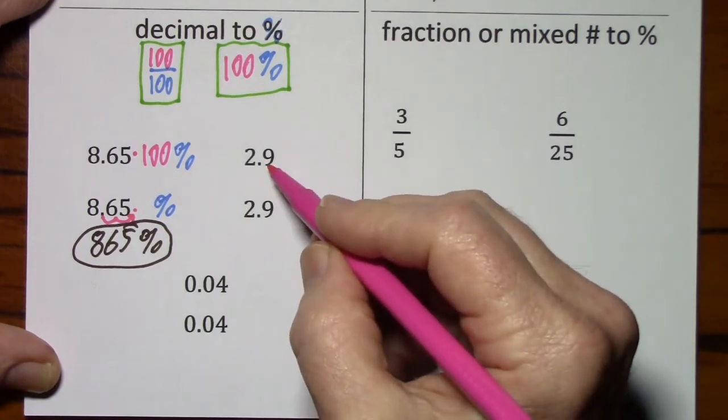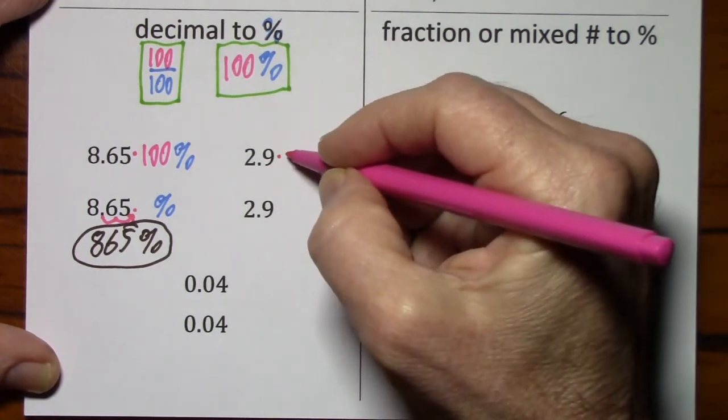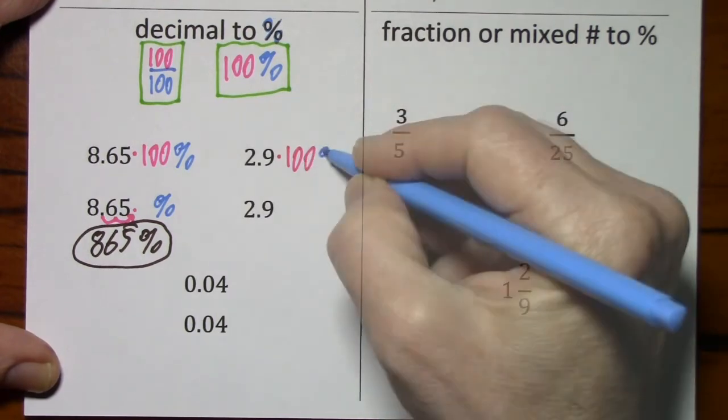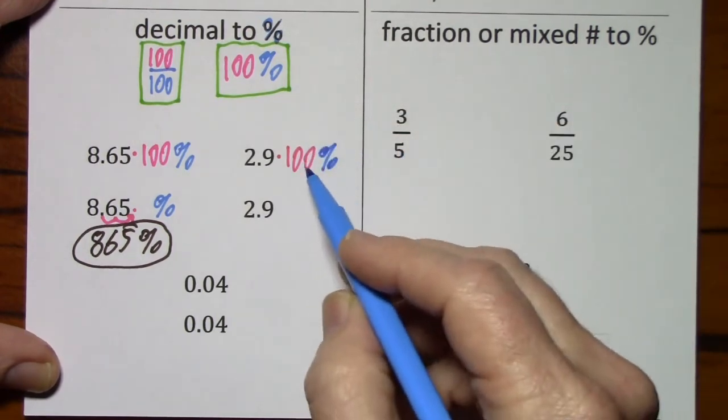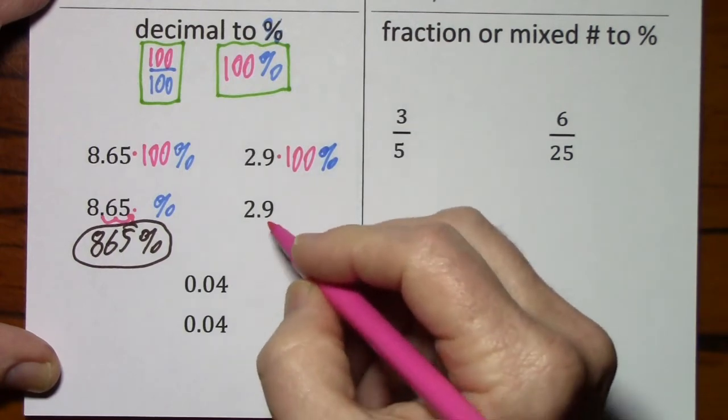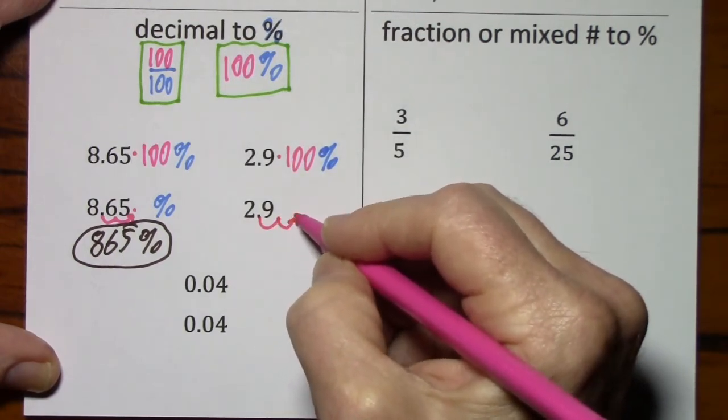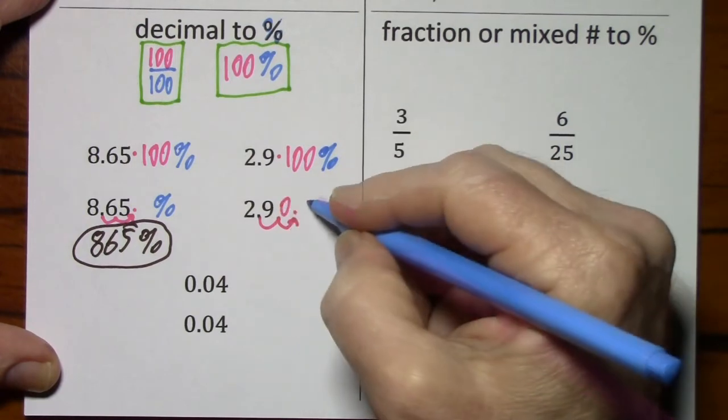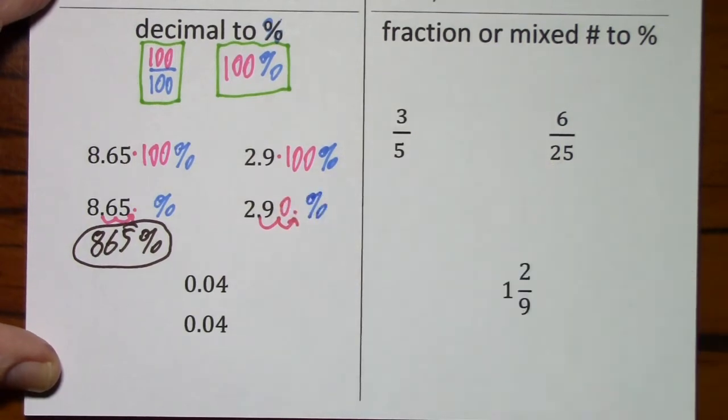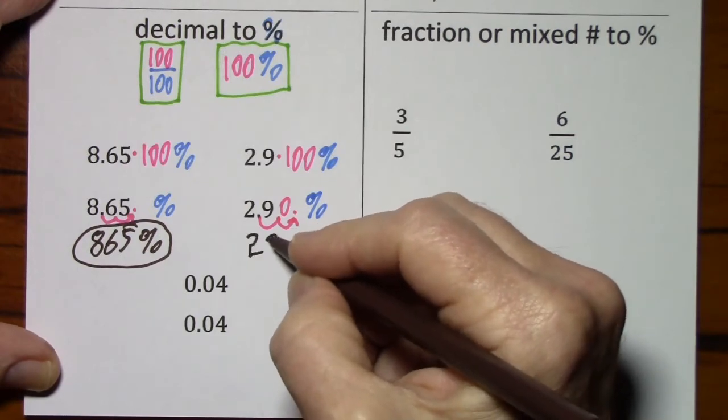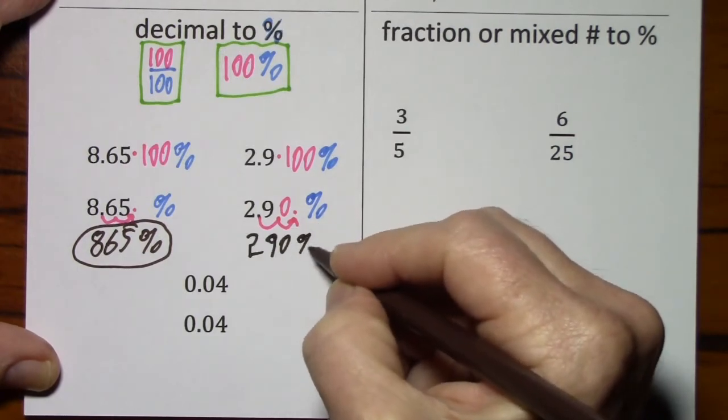So if I want to put in a percent sign, I can say times 100% because I'm just multiplying by a 1. If I multiply by 100, I just move the decimal two places. Percent sign is still sitting there. So this gives me 290%.